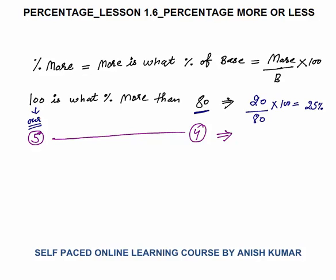So rather than calculating 100 to 80, I can easily calculate: 5 is what percent more than 4. Percentage more is more — 5 is 1 more than 4. So 1 by 4 into 100 gives 25% again. When numbers are simple, you can always take the ratio.